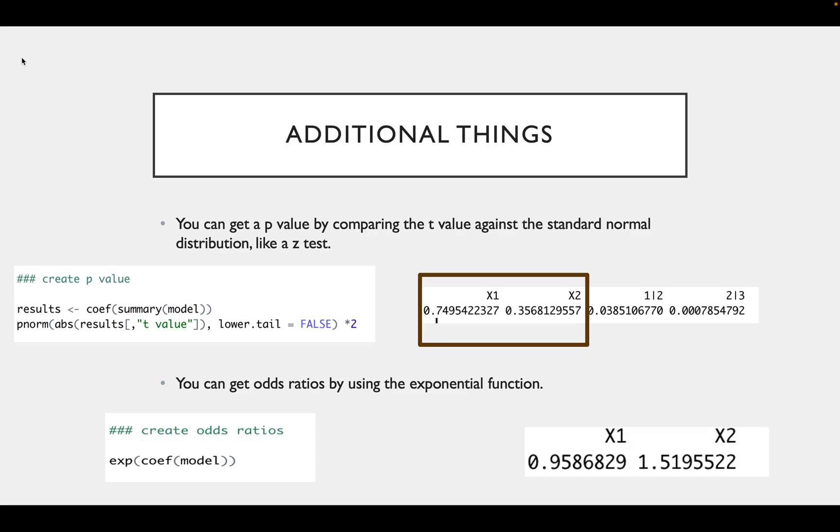To do this, you need to store the coefficients of your model as an object and then use the function pnorm to create the results. As you can see here, neither of our independent variables had a significant p-value.